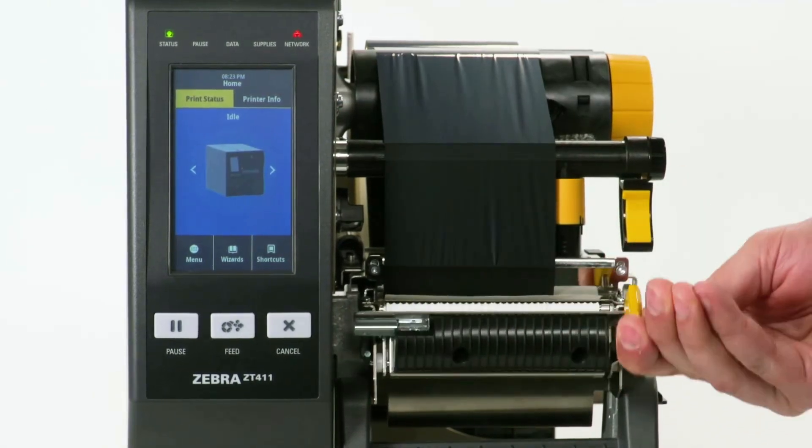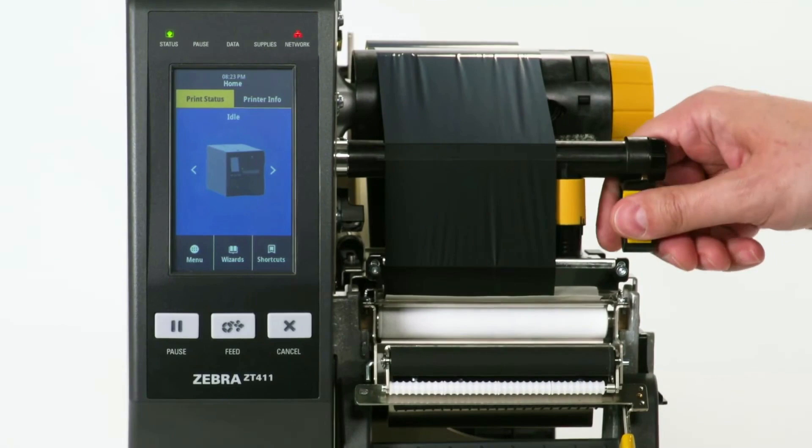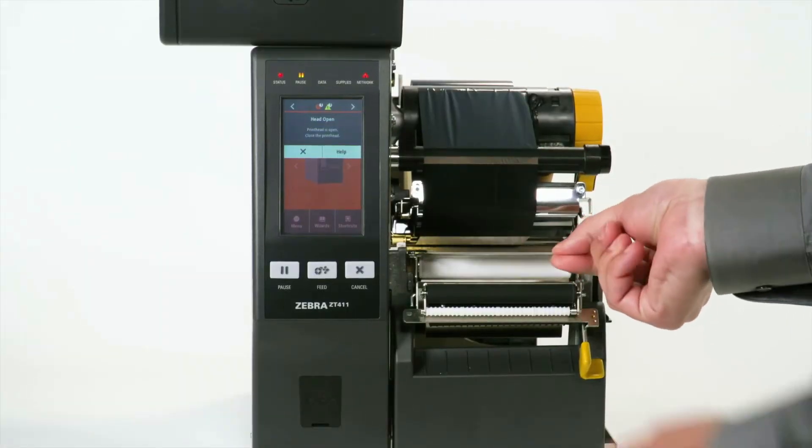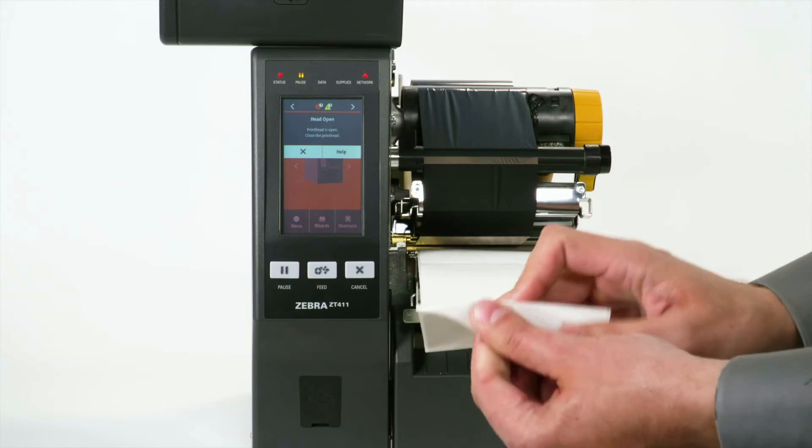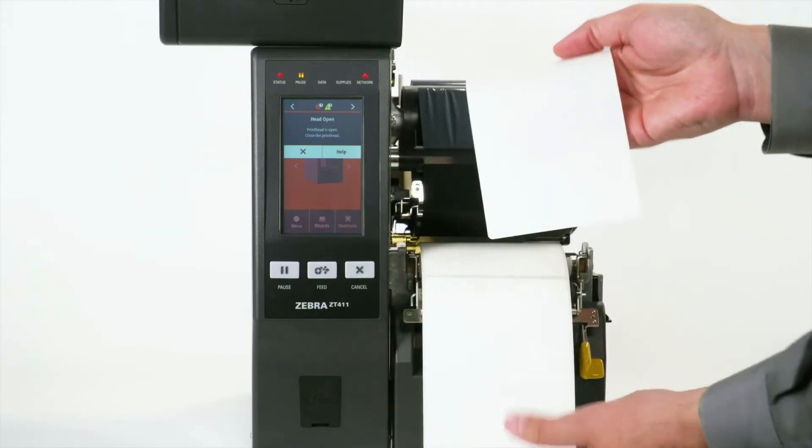Open the peel assembly. Open the printhead. Pull the labels out about 12 inches or 300 millimeters. Remove the labels off the liner.